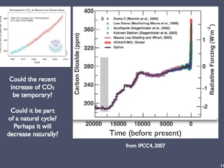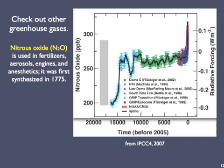But maybe the current value of 392 parts per million isn't so different from other times even farther in the past — maybe 20,000 years isn't far enough to look back. First, let's check out a couple of other important greenhouse gases. Nitrous oxide, or N2O, is used in fertilizers, aerosols, engines, and anesthetics. It occurs naturally, and humans figured out how to artificially synthesize it in 1775. As you can see, the concentration of N2O in the atmosphere started to climb very rapidly in the recent past — this looks a lot like the CO2 graph.